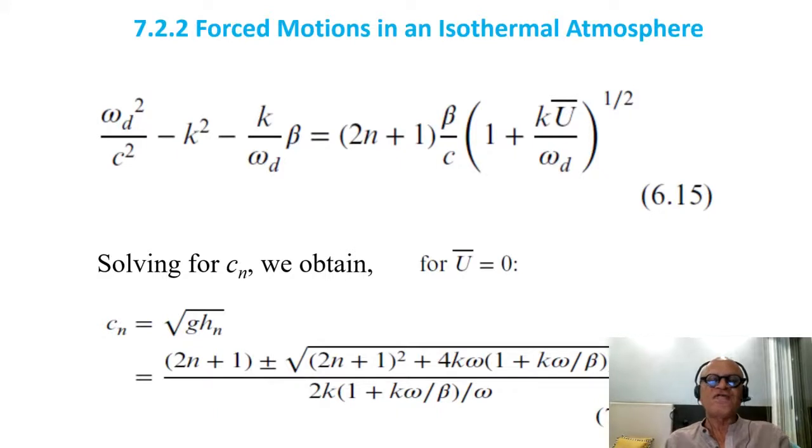A is this oscillatory solution, which is good for us. If we look at forced motions in an isothermal atmosphere then, going back to our general dispersion relation with longitudinal waves, meridional mode number and the basic state, we can solve for Cn, which is square root Ghn, sorry.